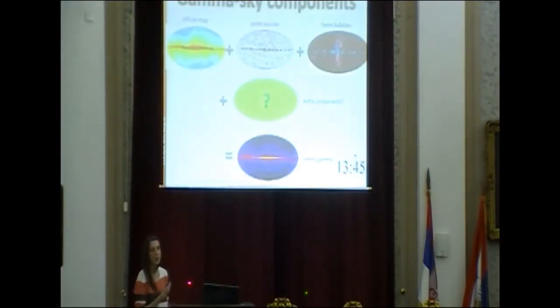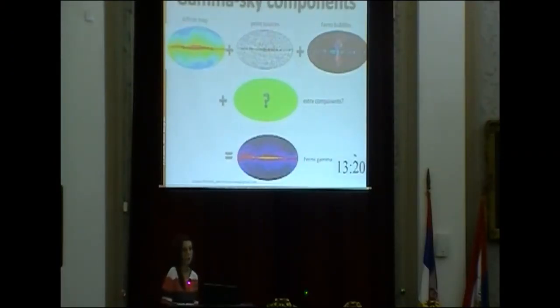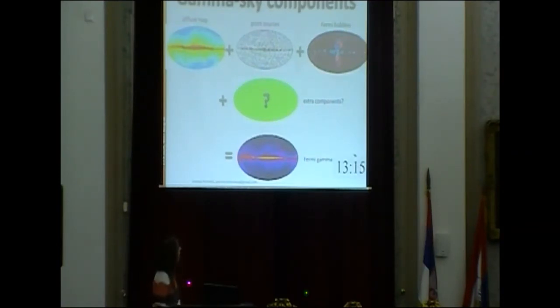You could decompose each and every one of these maps by modelling all different components. You can model the diffuse map, you can also model point sources. You can model something that has been discovered by Fermi-LAT, and those are the Fermi bubbles — two features that go up and below our galactic disk and probably represent something that came from the active past of our galaxy, from jets from an era when our galaxy had an active galactic nucleus. Then you may add an extra component, so that when you add up all of these maps, what you get is the same as what Fermi gets.